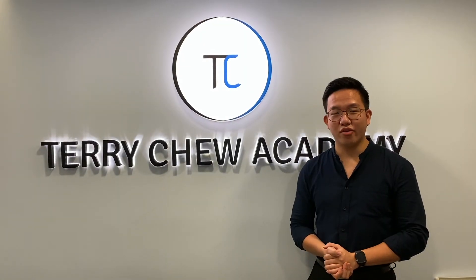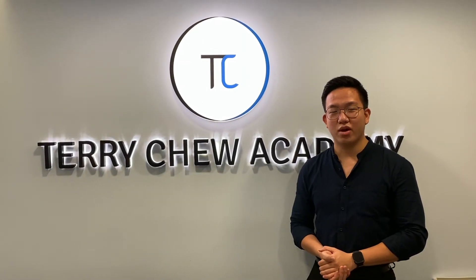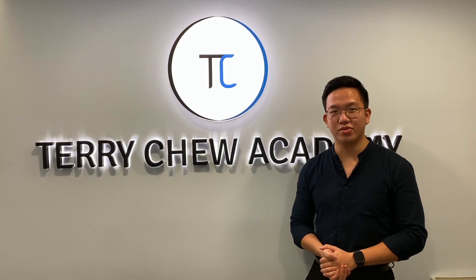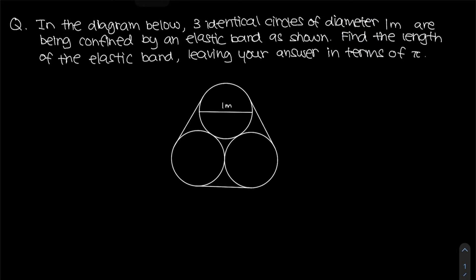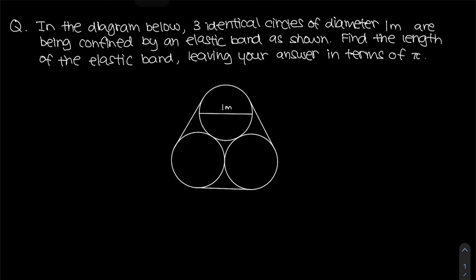Hello everyone, thank you for checking out this video. You are with Coach Joel from Terry Chill Academy. We are going to solve this question together. This question is regarding circles. Three identical circles of diameter one meter are being confined by an elastic band. Find the length of the elastic band, leaving your answer in terms of pi.